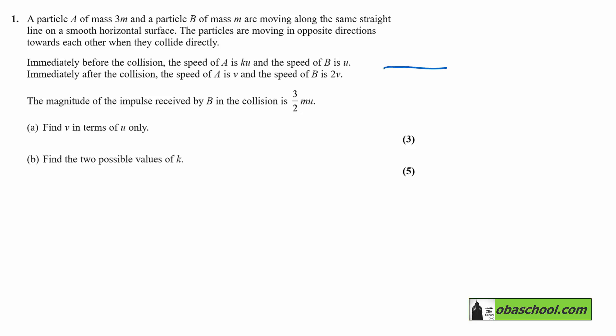Let's have a picture of that situation. This is the before picture. We have particle A here, which has a mass of 3m, and particle B here, which has a mass of m. This one is moving with a speed Ku and this one with a speed U.